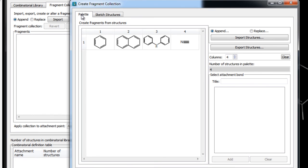Now before we add structures to the fragment collection, we first need to define the attachment bond. This can be done by selecting the structure, clicking on a bond to define the attachment, and clicking add.